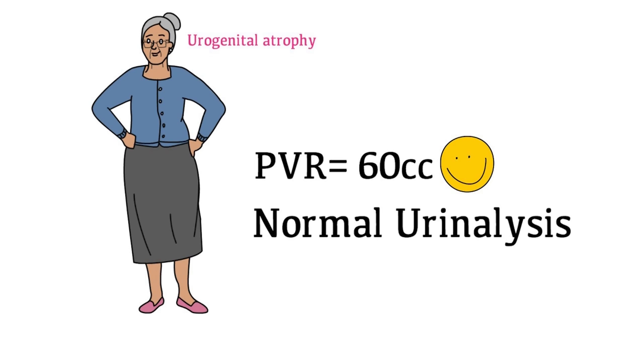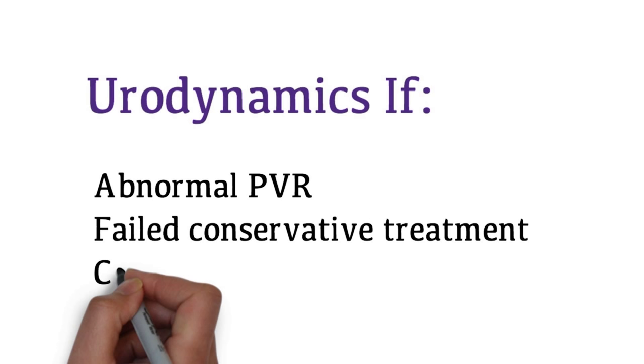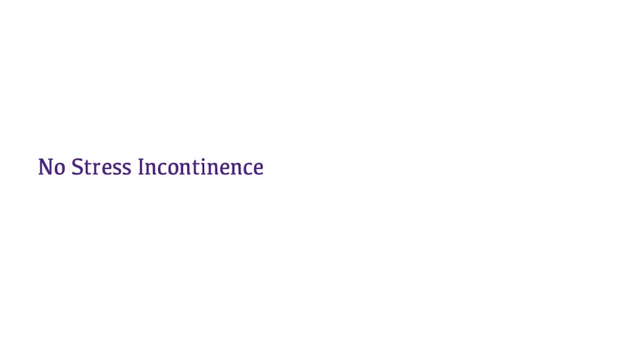You can perform urodynamics if the patient has an elevated PVR on initial assessment, if they have failed conservative treatment, or if they are considering surgery. Urodynamics can be done with a pessary in or out to assess bladder function and continence.